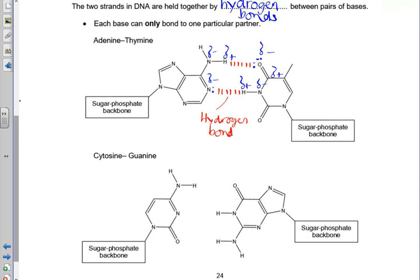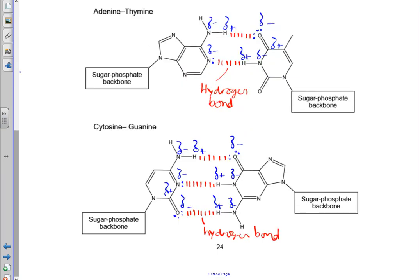Guanine makes three hydrogen bonds with cytosine. Stop the video and add the dipoles, the lone pairs, and the hydrogen bonds, and label them for the bottom diagram. I've now added the dipoles, the lone pairs, and the hydrogen bonds to the G-C base pair.